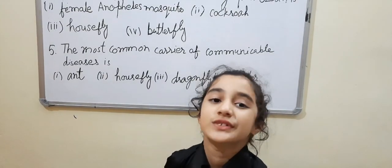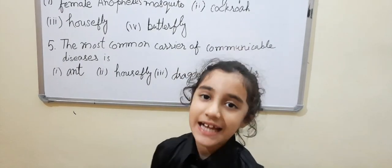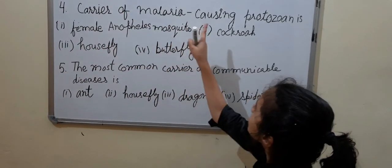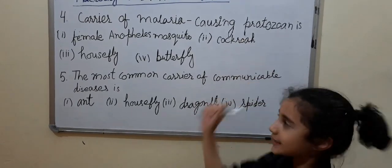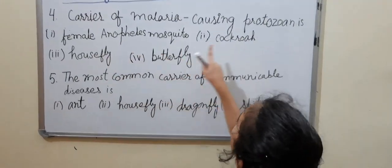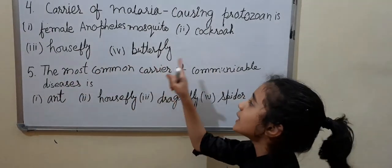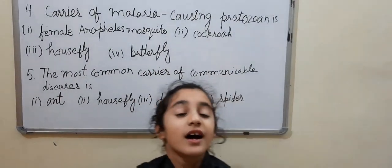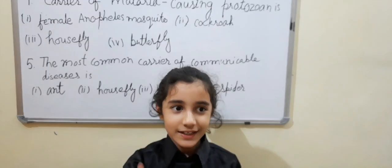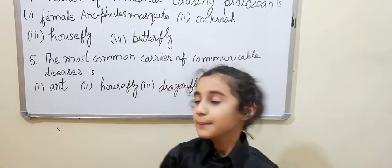Before going to the next question, like and subscribe my channel. Question number 4: The carrier of the malaria-causing protozoan is — female Anopheles mosquito, cockroach, housefly, or butterfly. Your time starts now.